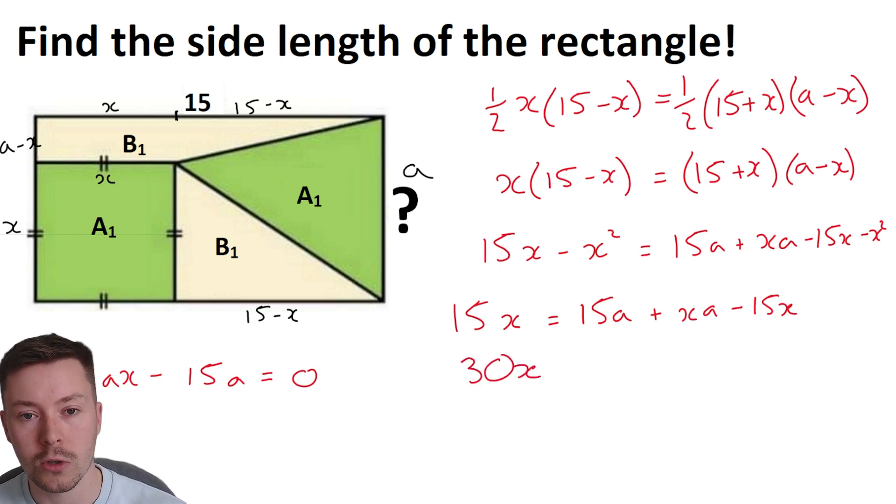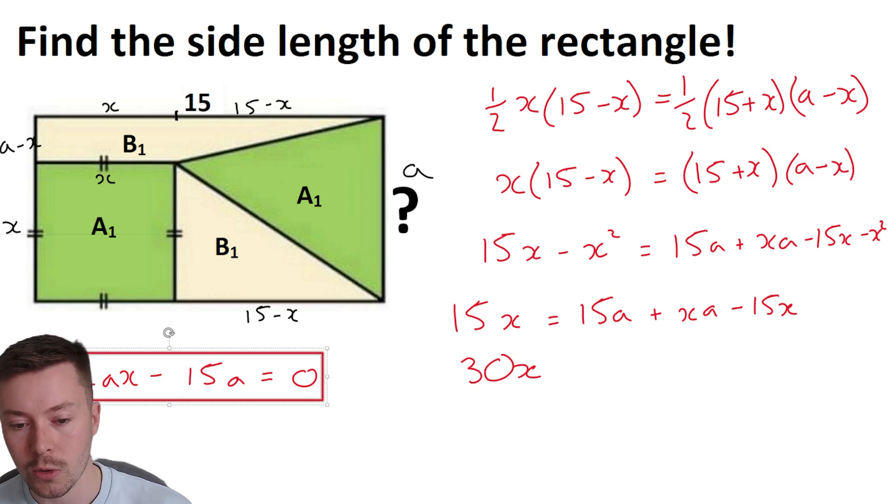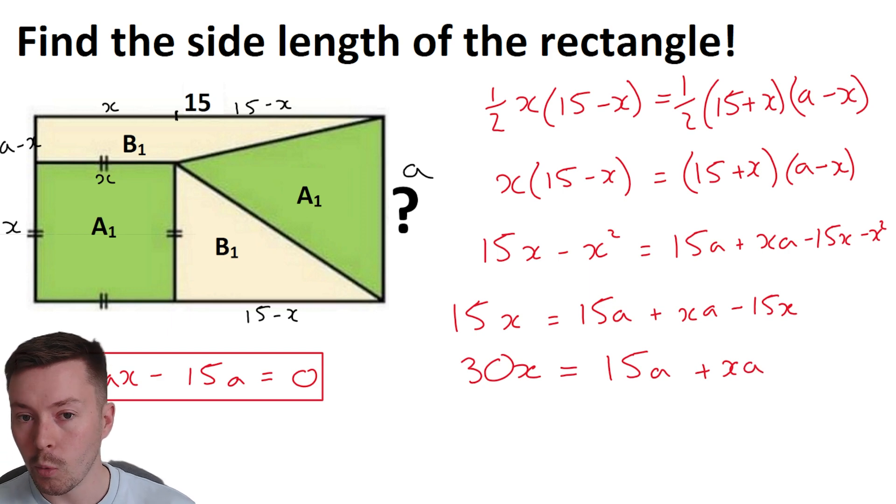So if I rearrange this equation we've just found on the right-hand side here, so that I've got X as the subject, I can then substitute in for X and then I'll have an equation in terms of just A. So what I want to do next is add my 15X to get 30X.